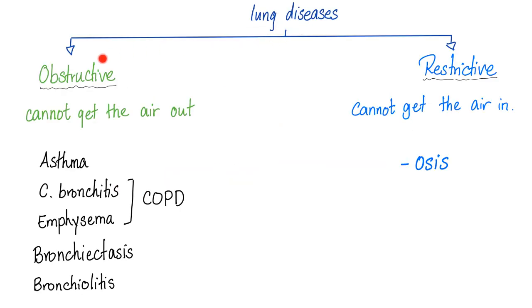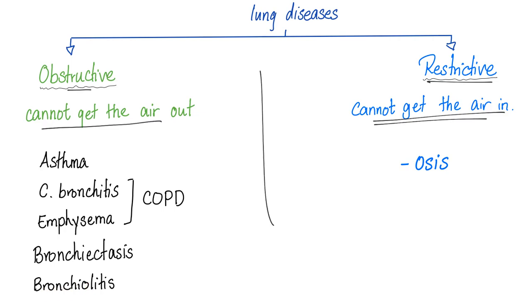Lung diseases are divided into obstructive and restrictive. Obstructive: I cannot get the air out. Restrictive: I cannot get the air in. Obstructive includes asthma, chronic bronchitis, emphysema, bronchiectasis, and bronchiolitis. Restrictive includes any disease that ends in '-osis' and is related to the lung — coal workers' pneumoconiosis, asbestosis, silicosis, berylliosis, sarcoidosis, and so on.